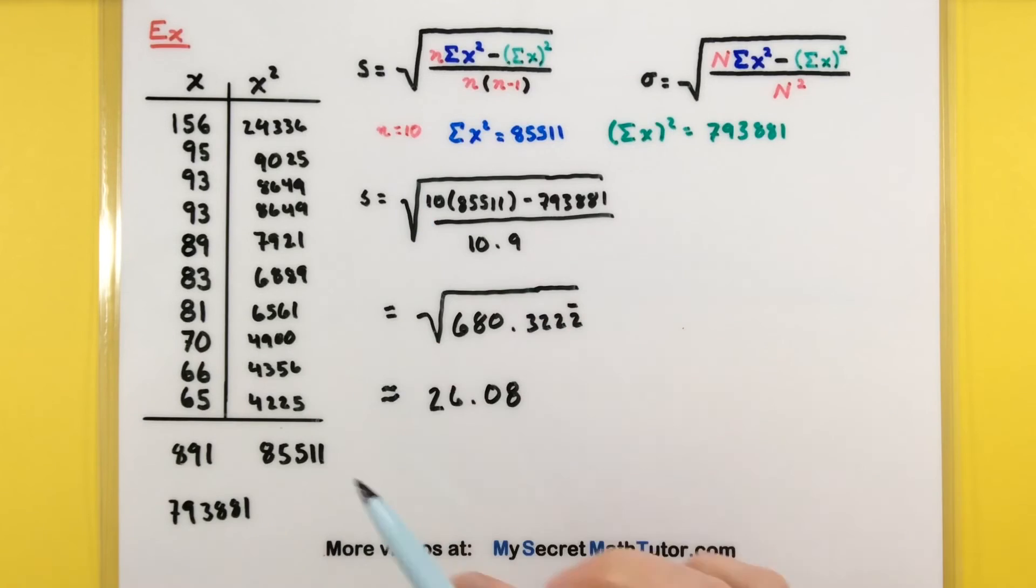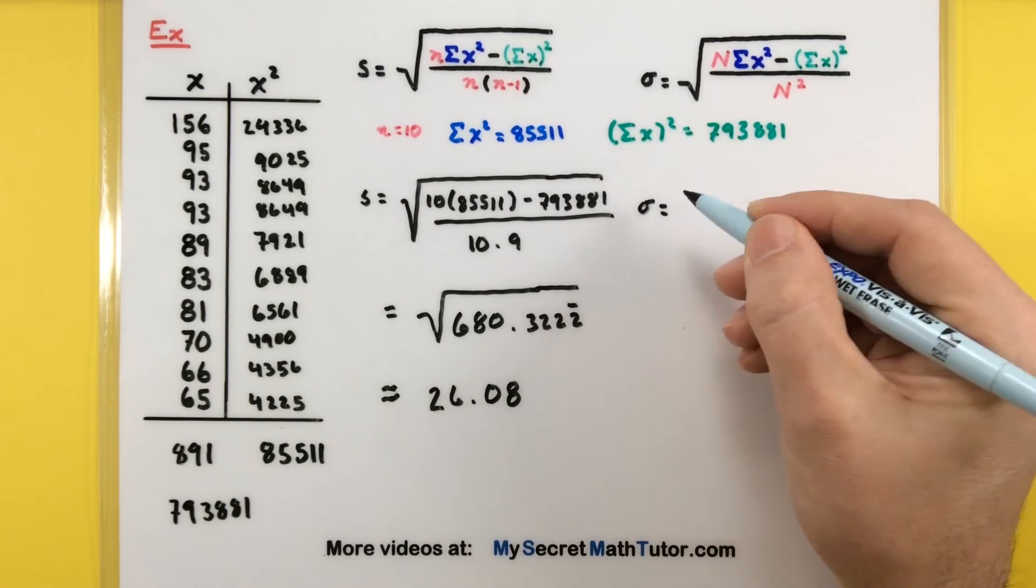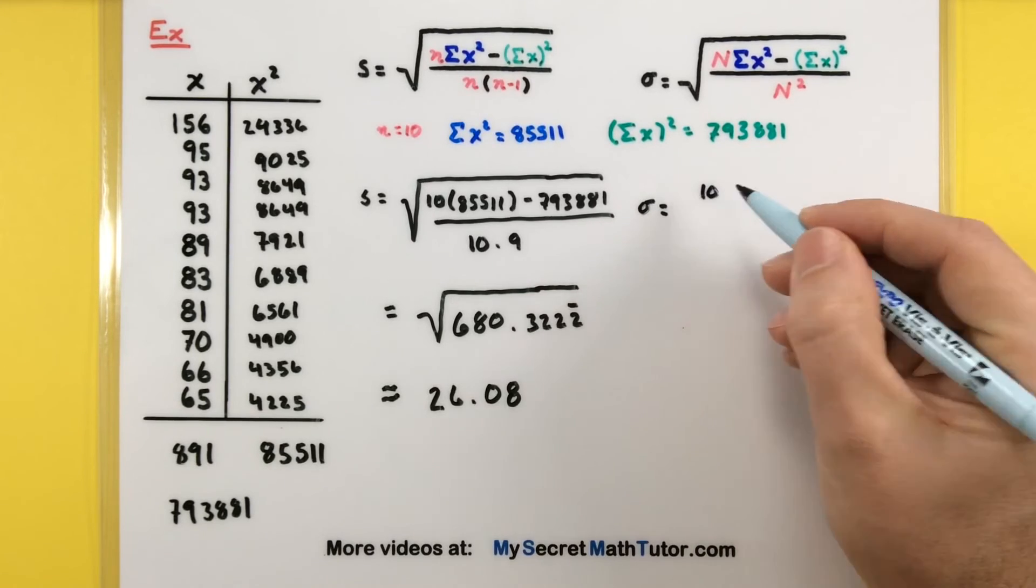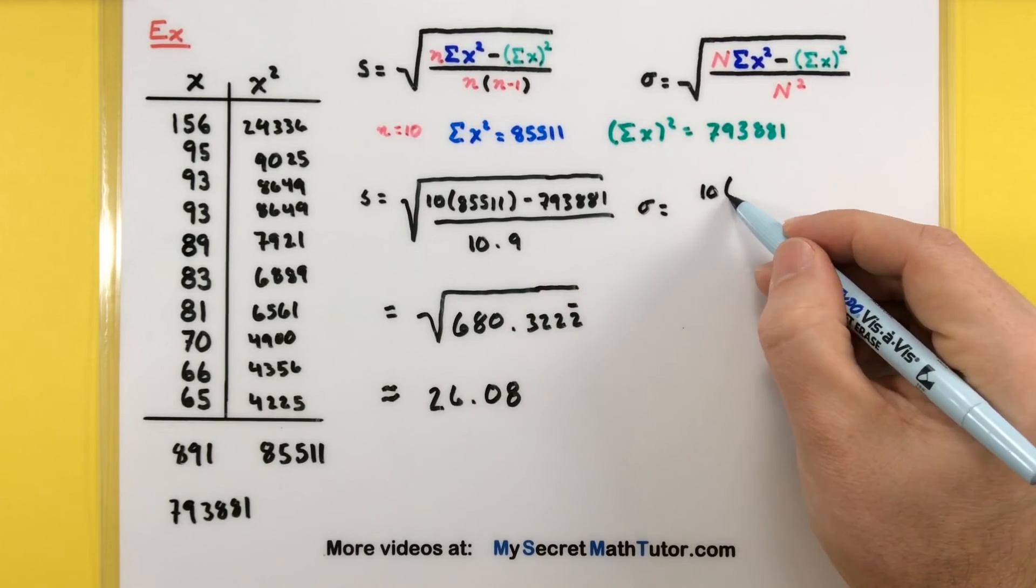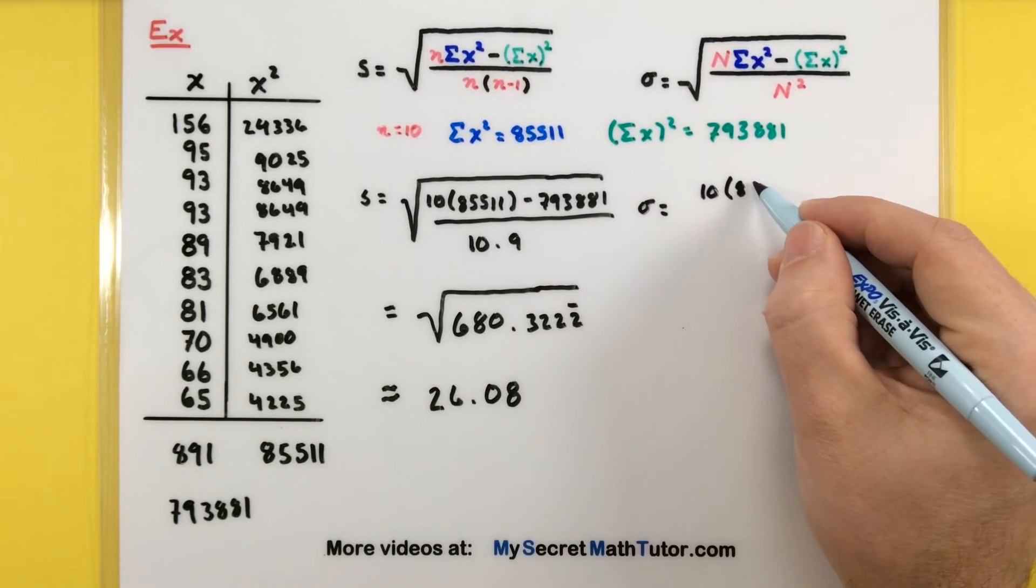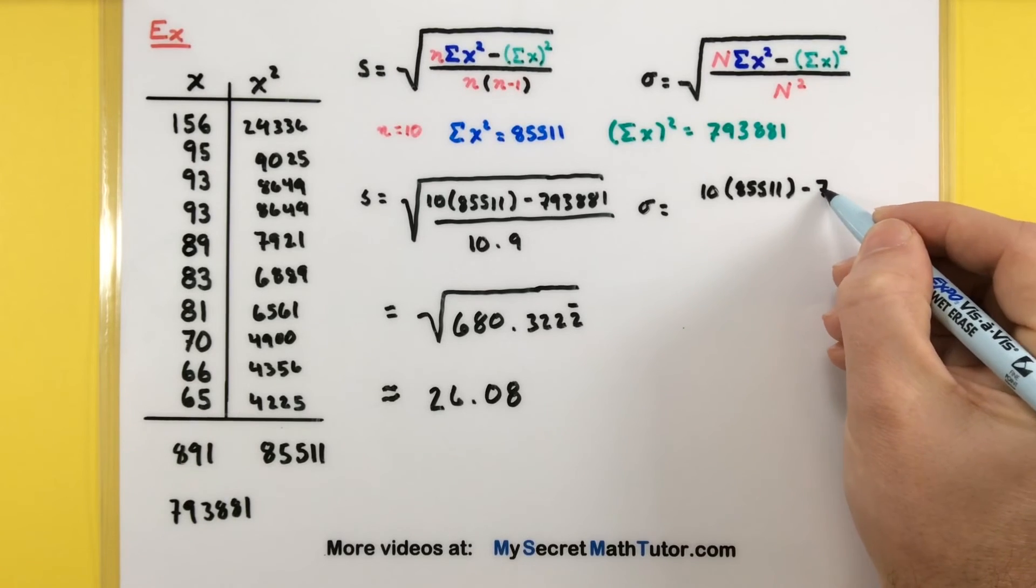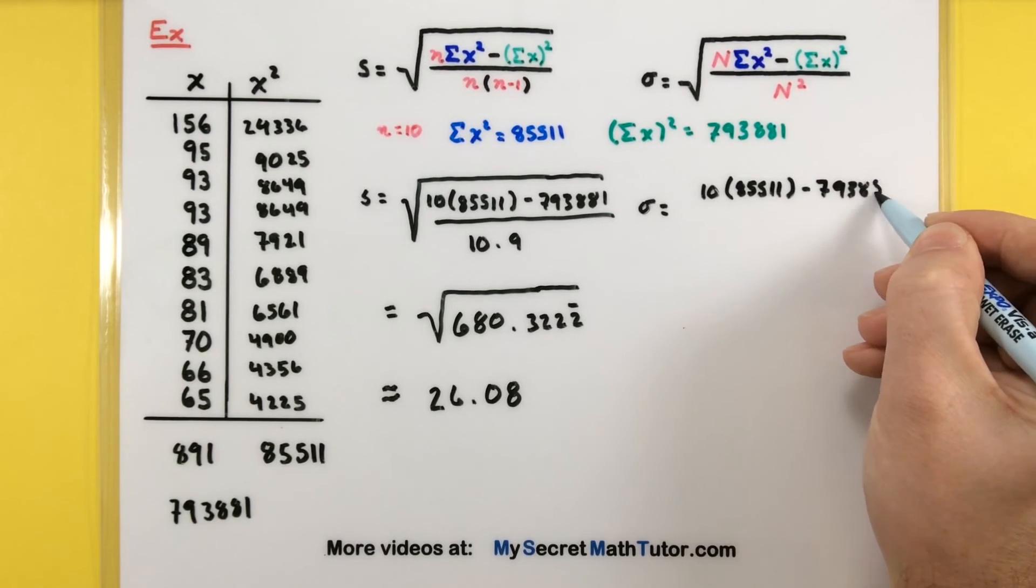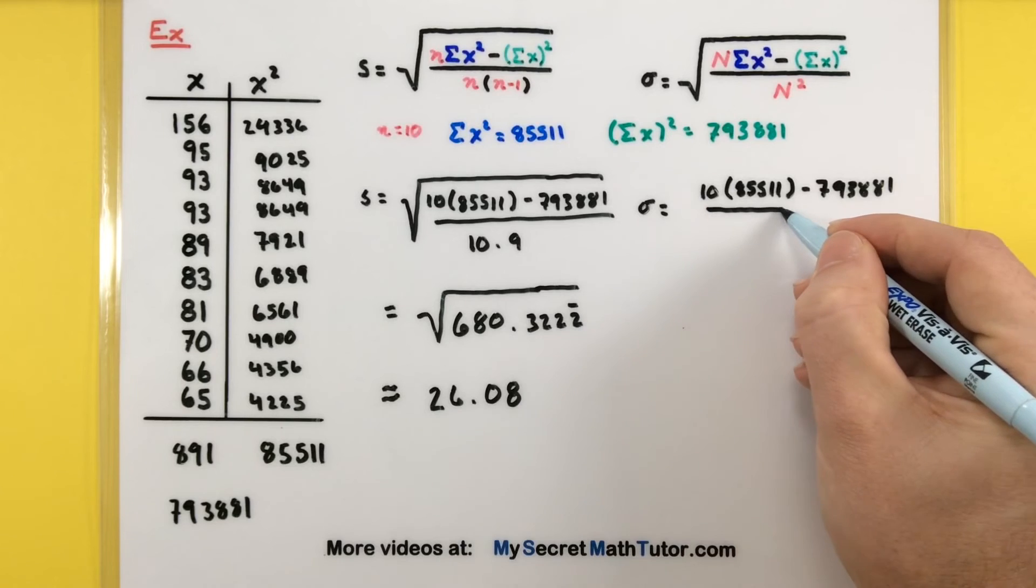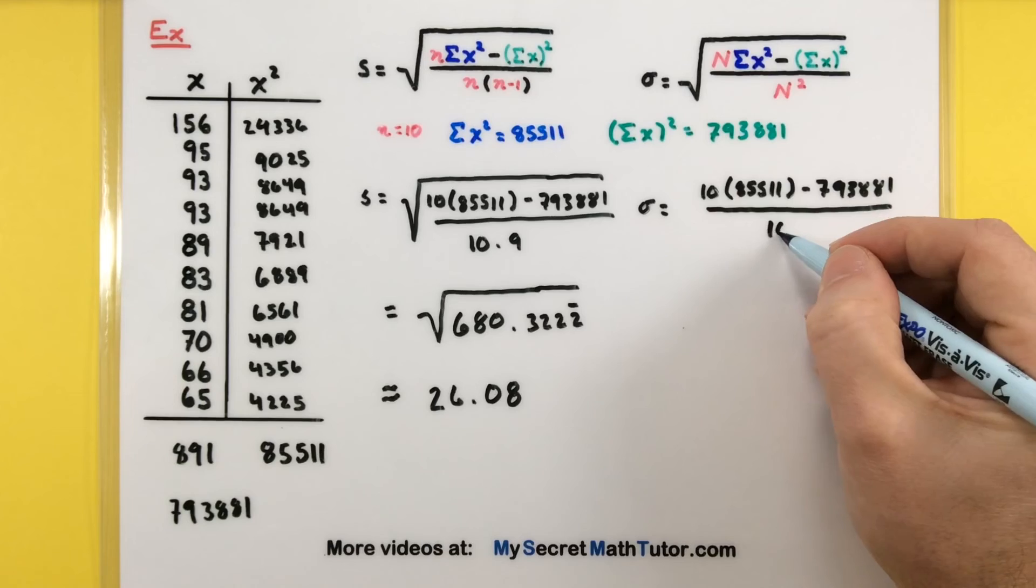Now, if your data comes from a population, this will be almost identical. Let's go ahead and plug those in and see what they would look like. The value of n would still be the same. Same thing for our sigma x squared. So, there's our 85,511 minus 793,881. And the change is instead of saying 10 times 9, this would really be just 10 times 10 or 100.